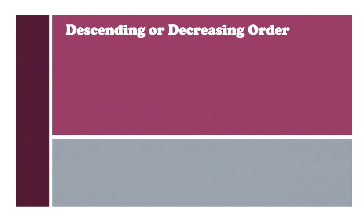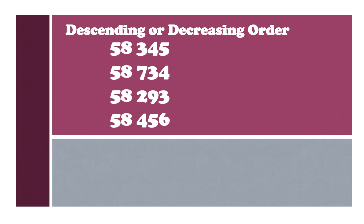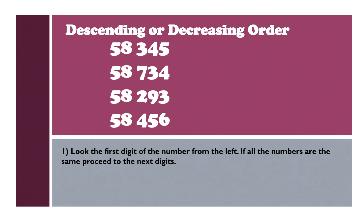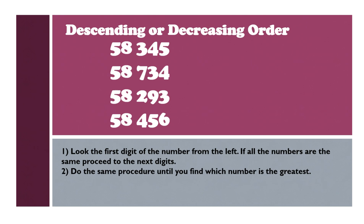Let us proceed with descending or decreasing order. When you say descending or decreasing order, it is arranging numbers from greatest to least. Let us try with this following set of numbers: 58,345, 58,734, 58,293, and 58,436. Note the first digit of the number from the left. If all the numbers are the same, proceed to the next digits. Do the same procedure to find which number is the greatest, then arrange the numbers from largest to smallest.